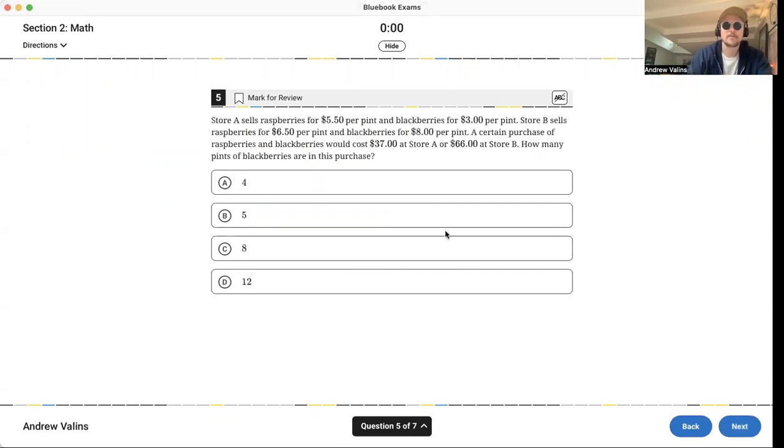Number 5. Oh my God, we're 5 sevenths of the way there. Store A sells raspberries for $5.50 a pint and blackberries for $3 a pint. Store B sells raspberries for $6.50 a pint and blackberries for $8 a pint. A certain purchase of raspberry and blackberries will cost $37 at store A or $66 at store B. How many pints of blackberries in this purchase? So far of all the questions, this is going to take the longest because what we're dealing with here, friends, is systems of equations. This is the kind of question where it's a word problem. You have to set up your own two equations, the equation for store A and the equation for store B.